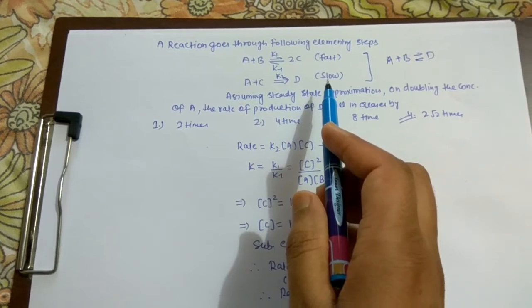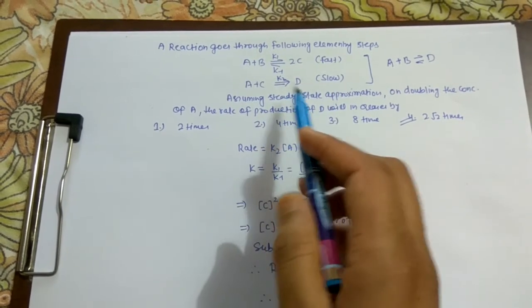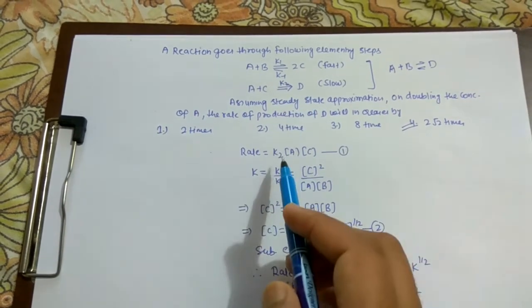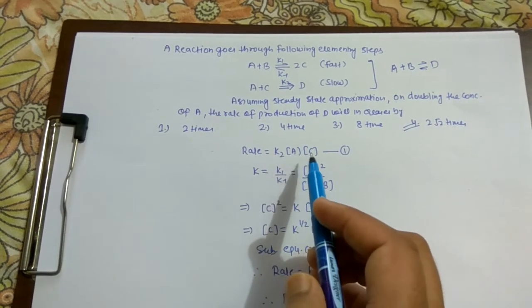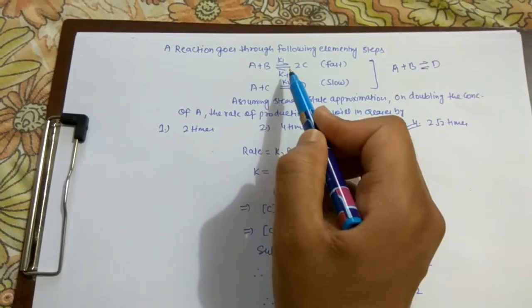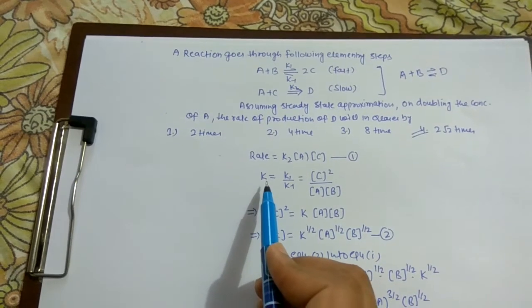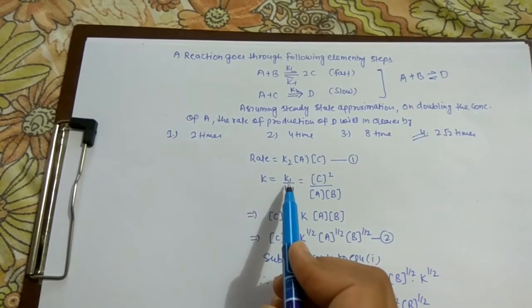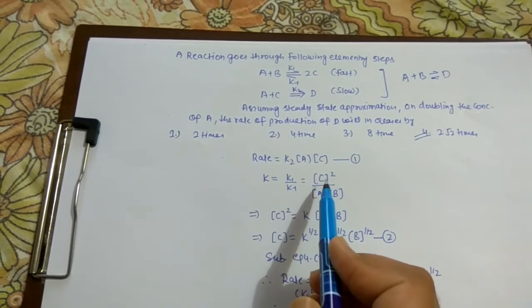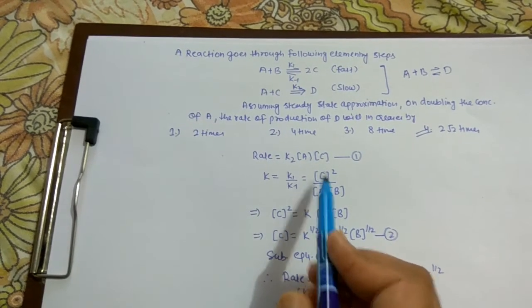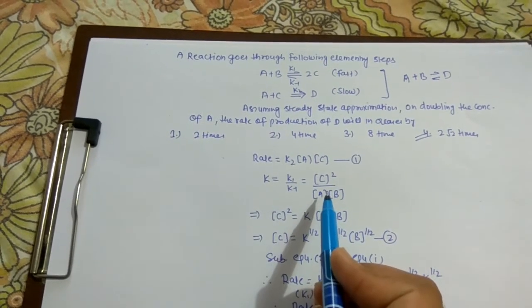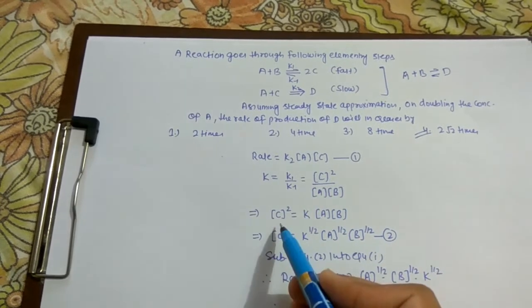This one is the slowest step, therefore rate of reaction, that is formation of D, will equal k2 into A into C. Now here they are in equilibrium, therefore on applying equilibrium condition, K equals k1 over k-1, that is square of concentration of product divided by concentration of reactant.